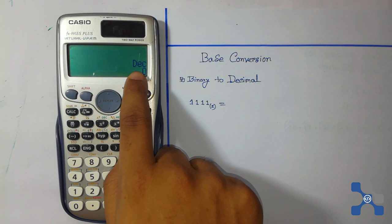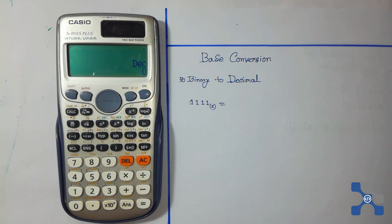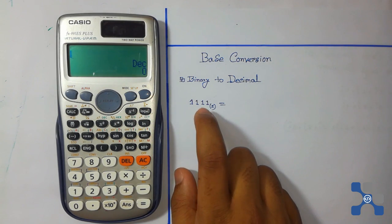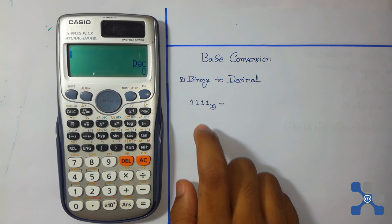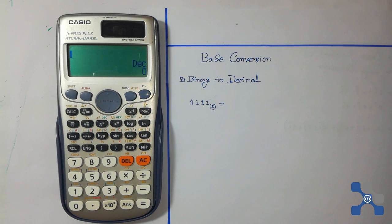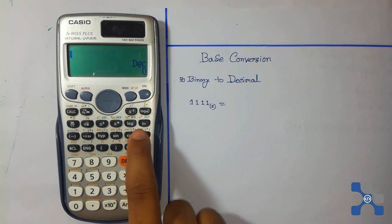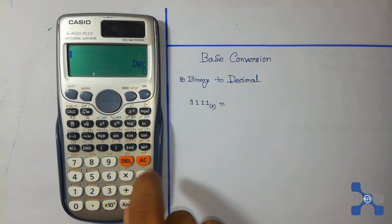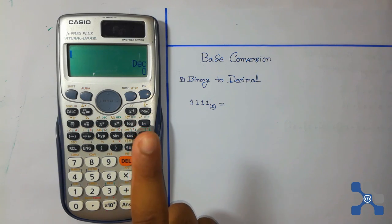here is decimal, that means the calculator is now in decimal mode. But this number is in binary, so we need to go to binary mode. To go to binary mode, we need to press this lock button once.